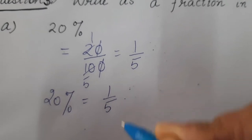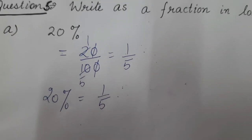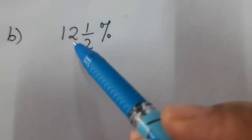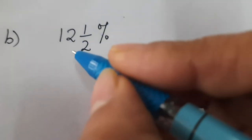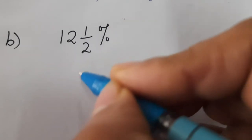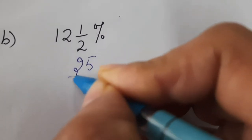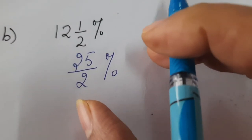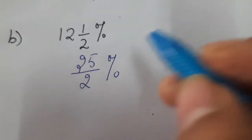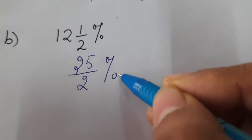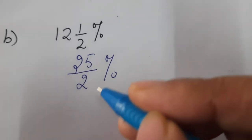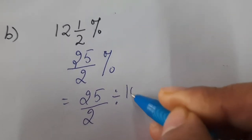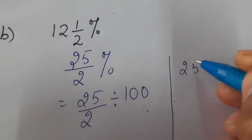Now let's start part B. Part B is 12 and 1/2 percent. First, we convert this mixed fraction into an improper fraction: 12 times 2 is 24, plus 1 is 25, so this becomes 25 upon 2 percent. Now to convert this percentage to a fraction, we remove the percent sign, which means we divide by 100. So this becomes 25 upon 2 divided by 100.